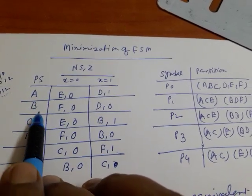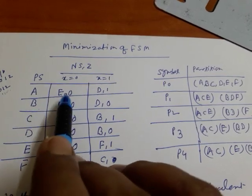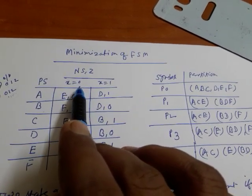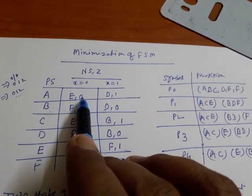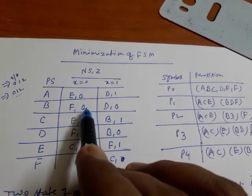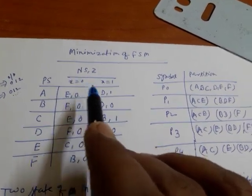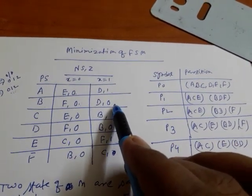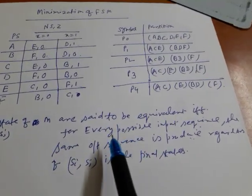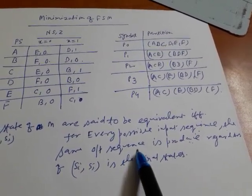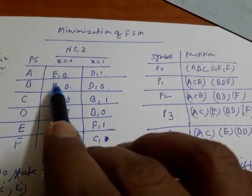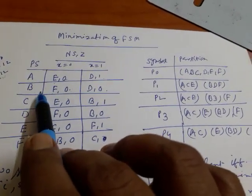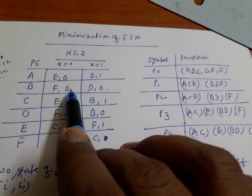Looking at the figure, for states a and b with input sequences 0 and 1: if I apply 0 to a I get 0, and for b I also get 0, so the output sequence is the same for input 0. But if I apply 1, I get 1 from this part and 0 from the other part. It only matters what the output is for the input, not the next state.